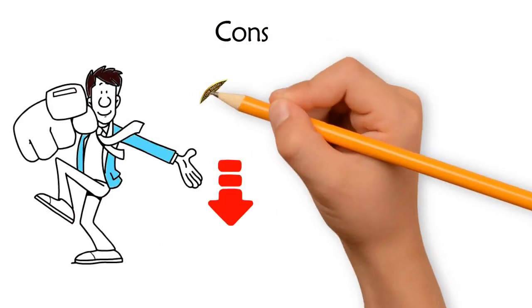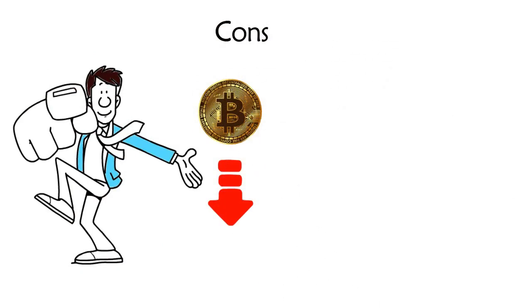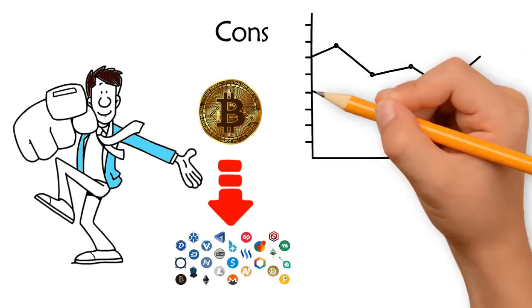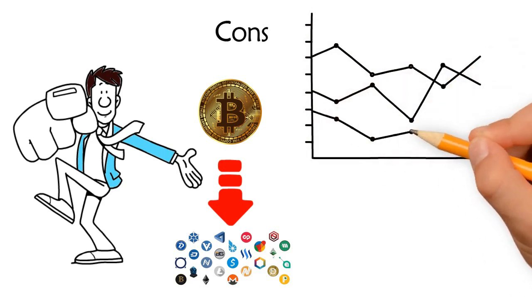Cons of altcoins: Number one - Bitcoin, being the primary cryptocurrency, dominates the market. As a result, the prices of altcoins depend on Bitcoin's value. Number two - investing in altcoins could be risky as they aren't as stable in terms of a solid presence as Bitcoin.